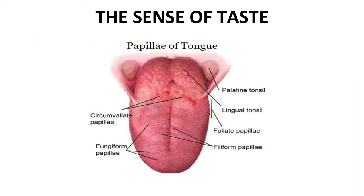However, taste buds are mostly found clumped together on the tongue and are called papillae. Most of the papillae have grooves — that is, moats — around the sides. When we eat or drink something, the liquid in the mouth fills up these grooves around the papillae and stimulates the hair cells chemically. The cells then send sensory messages to the brain, resulting in the sensation of taste.